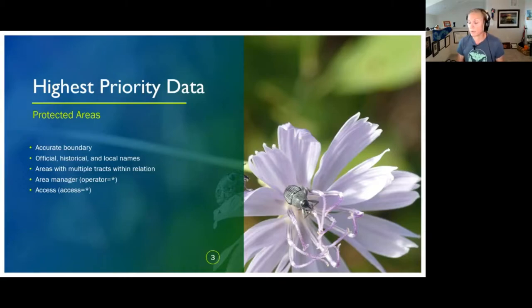For me, the top priority is mapping the protected areas. So an accurate boundary, so you know when you're on and off the protected area, having official historical and local names. Areas with multiple tracks are within a relation, and they're named appropriately. So for example, the Withlacoochee National Forest, and then the citrus tract of the Withlacoochee National Forest.